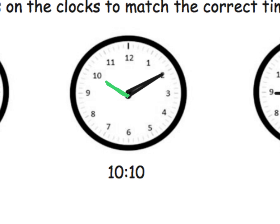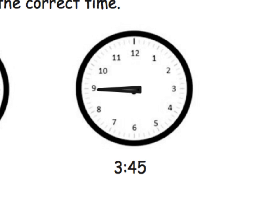The hour hand starts pointing toward the 10, but we're a little bit past 10 o'clock — we're 10 minutes past. So I'm going to move that hour hand just a little bit, rotate it just a little bit so it's not exactly at the 10 but a little bit past the 10. Totally estimating here, parents and teachers.